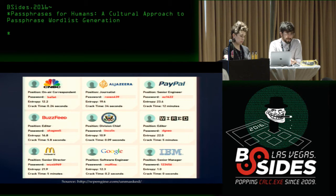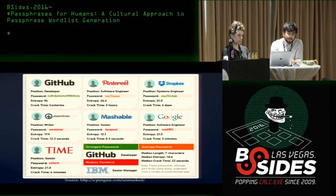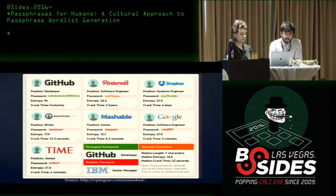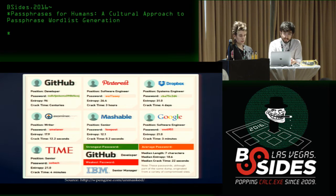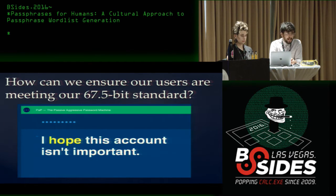Unfortunately, it's not just everyday users creating weak passwords. In that same Gmail dump were passwords from journalists at major news networks, a division chief at the Department of State, and a PayPal senior engineer. No surprise that the GitHub developer had a 96-bit password, but all these other people — who many of us are trusting with our data — may not be doing as well.